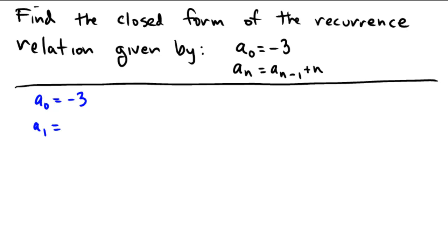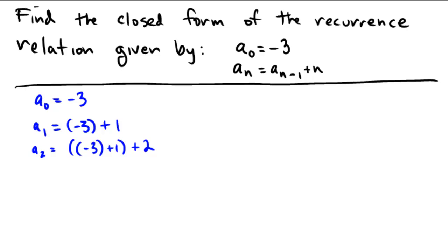a sub 1 would be the previous term, which is negative 3, added by n, which in this case is 1. So we're going to add a 1 there on the end. a sub 2 would be the previous term, which is now negative 3 plus 1, and then added by the n which is a 2.